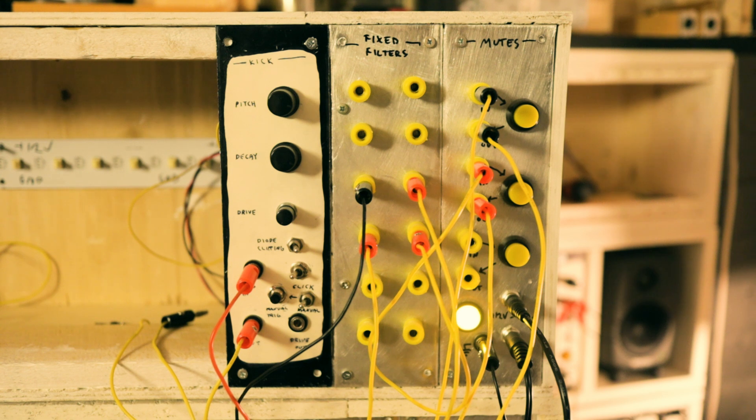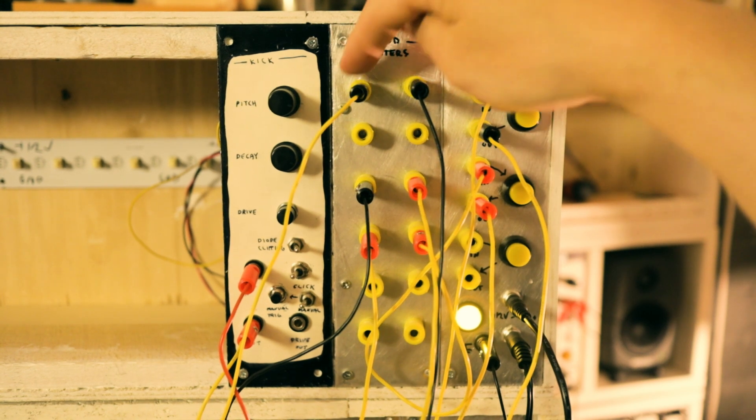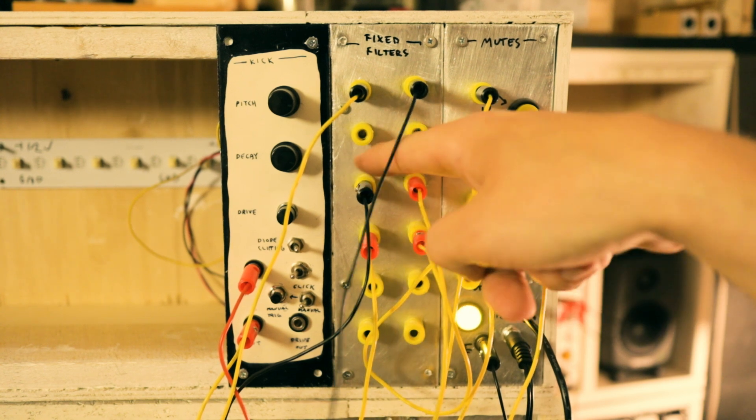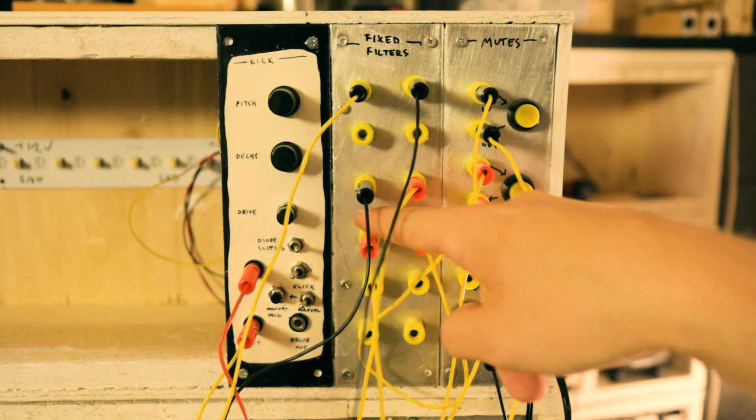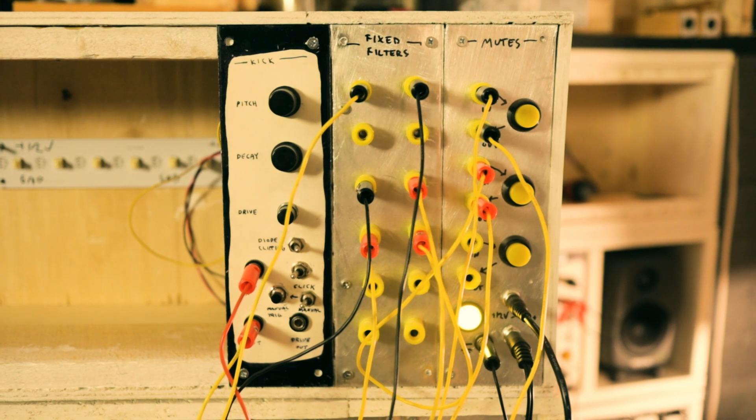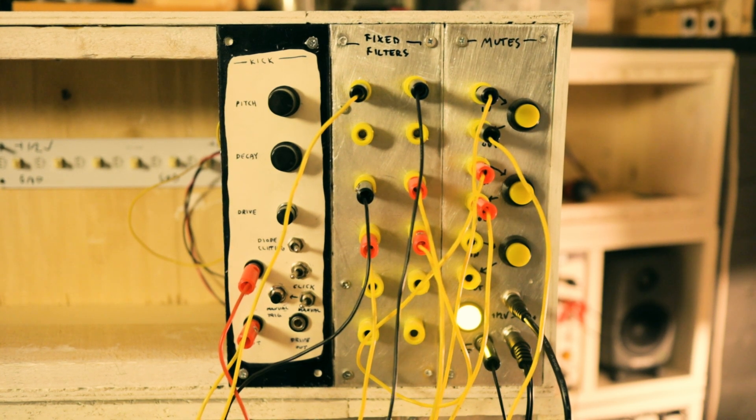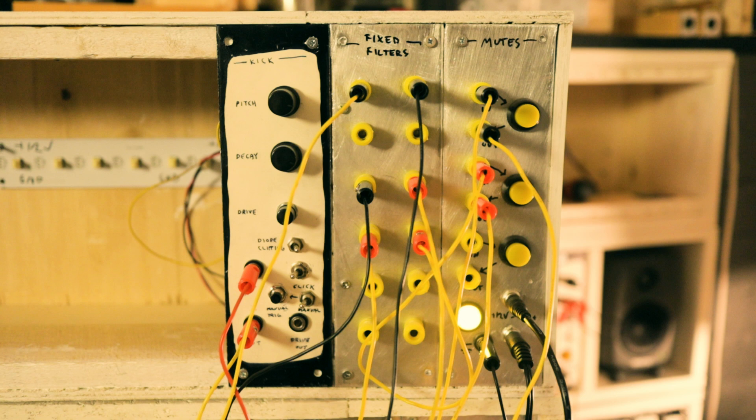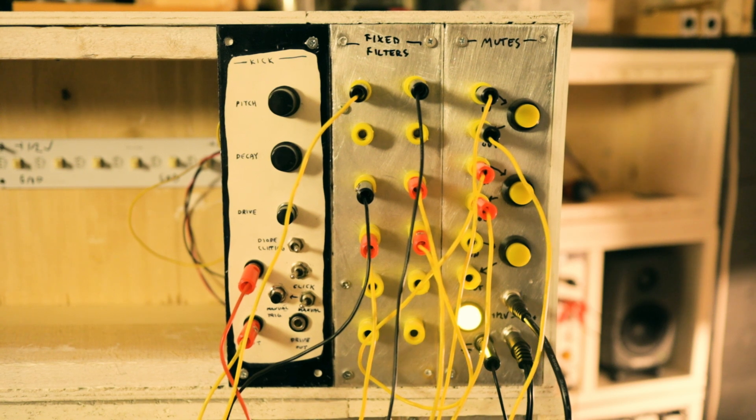And the noise of the snare is the white noise going through one of the filters now. Nice. So now we have the hi-hat going through one of the filters, the snare noise going through one of the filters, and then the snare shell going through one of the filters.